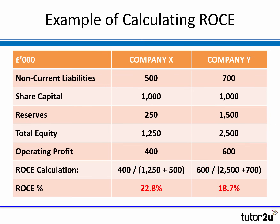Multiplying by 100, Company X has a Return on Capital Employed of 22.8%, which is actually higher than Company Y's ROCE of 18.7%. This is interesting because Company Y's operating profit is much higher in absolute terms. However, Company Y has a lot more capital employed in the business, so whilst its profit is higher in absolute terms, its relative rate of return — ROCE — is lower because it has so much more on the bottom half of that calculation.